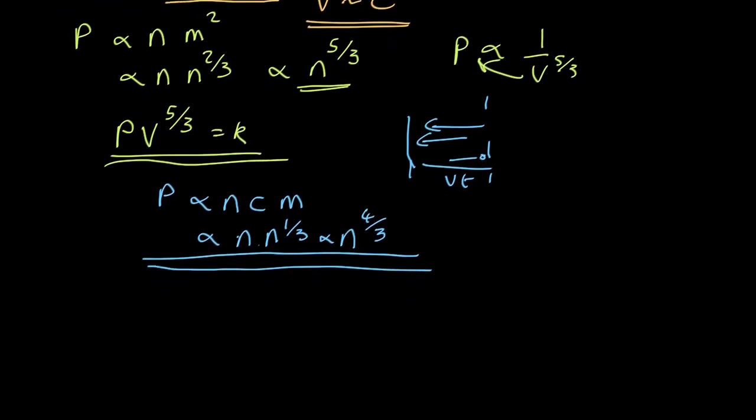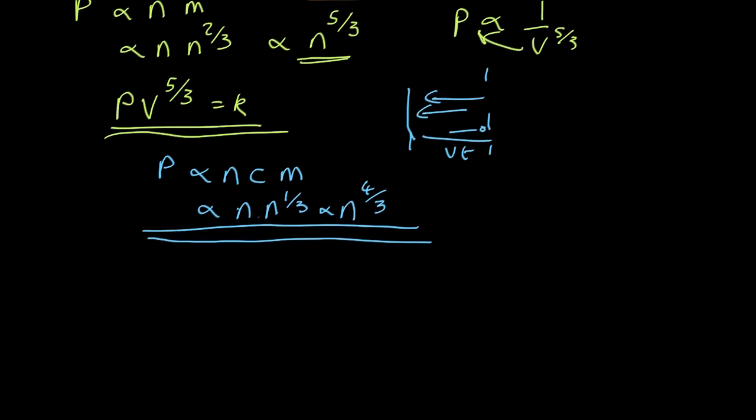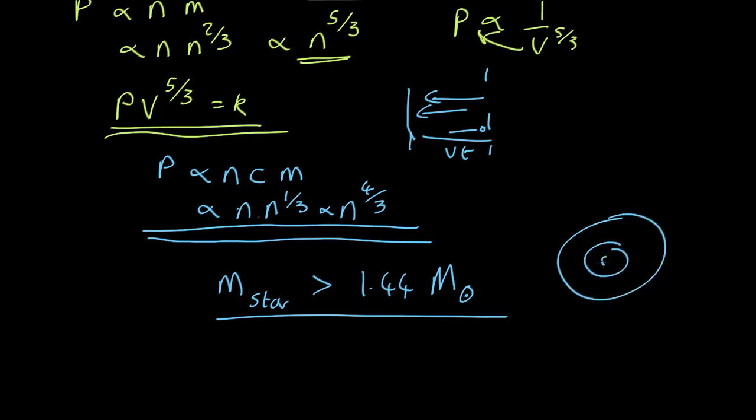Chandrasekhar did this calculation in a more sophisticated form and was able to show exactly what this mass is. He had to add up all the quantum mechanics properly and work out the motions and the pressure and balance it all out. But it turned out that for a mass of the star that exceeds roughly 1.44 solar masses, if the mass of the white dwarf is bigger than that, then it's unstable.